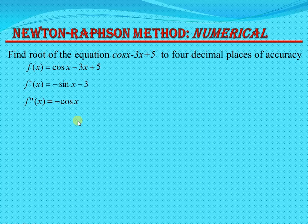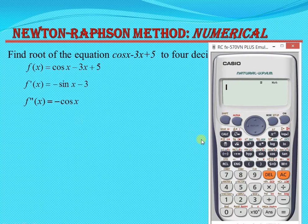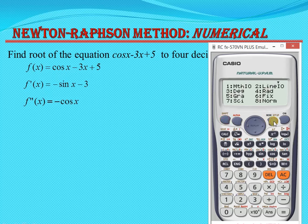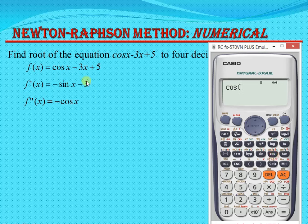Let me explain how to use the calculator to find functional values. First, convert to radian mode by pressing Shift and Mode — number 4 is assigned to radian mode. To define the function, press Alpha then X for the variable. Enter: cos(alpha X) minus 3 times alpha X plus 5. In this way you can define the function in the calculator.